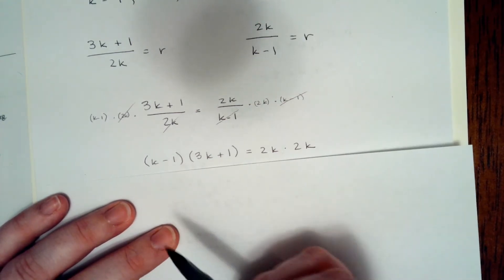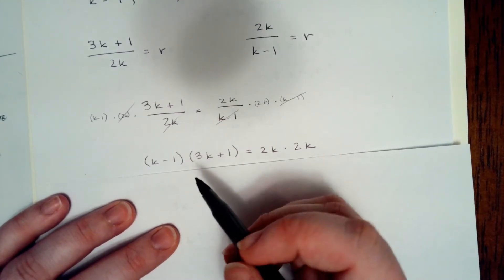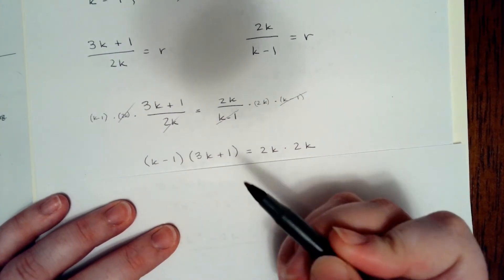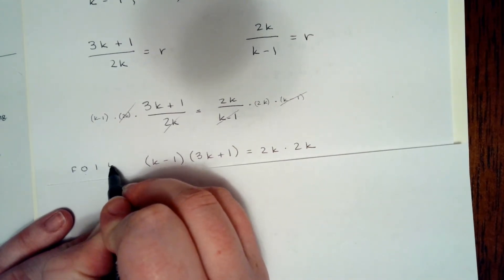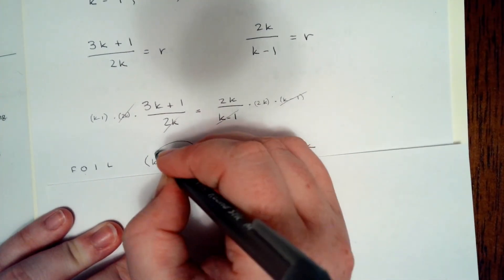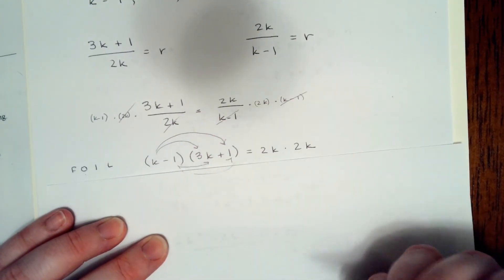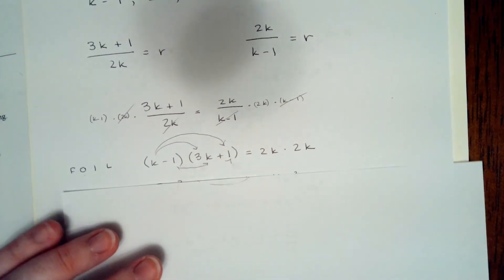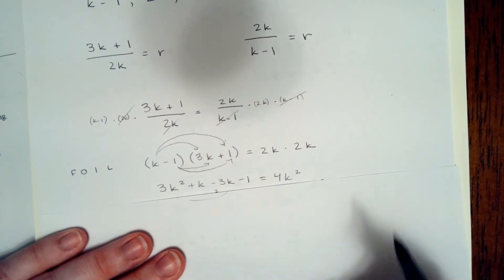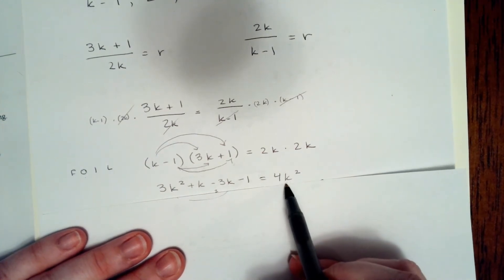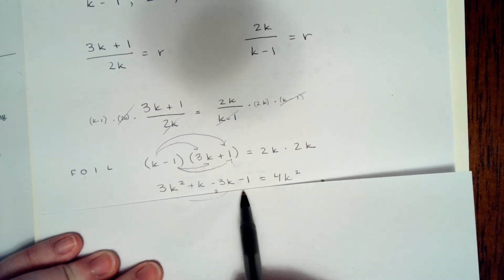So now to solve this problem, we're going to need to foil or basically unfactor our problem. We're going to need to distribute. And I don't know if you've learned the foil rule, but you always want to do first, outside, inside, last. So first terms, outside terms, inside terms, last terms. I'm going to finish that arrow just because I can. Now when you foil that problem, and we know that 2k times 2k is just going to be 4k squared, we're going to get 3k squared plus k minus 3k minus 1.